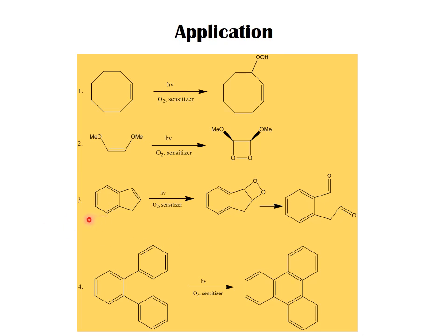In Example 3, indene in the presence of oxygen and sensitizer undergoes direct 2+2 addition to give dioxetane, which upon heating gives the carbonyl product. In Example 4, the substrate is analogous to stilbene but with an aryl system instead of an alkene system; like stilbene, it undergoes oxidative coupling to produce a polycyclic compound.